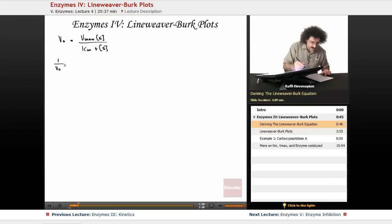When you do that, you end up with 1 over V0 equals Km plus S over Vmax times S. Now we have everything under one denominator. There's only a single term in the denominator. So let's separate those out and see what happens.